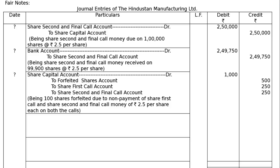Third entry - forfeiture: Share Capital Account debited for 100 shares of Mr. D fully called at Rs.10 - 100 × 10 = Rs.1,000. Credit to Forfeited Shares Account: 100 × Rs.5 = Rs.500. Credit to Share First Call Account: 100 × Rs.2.50 = Rs.250. Credit to Share Second and Final Call Account: Rs.250. Narration: 100 shares forfeited due to non-payment of first call and second and final call money of Rs.2.50 per share each.